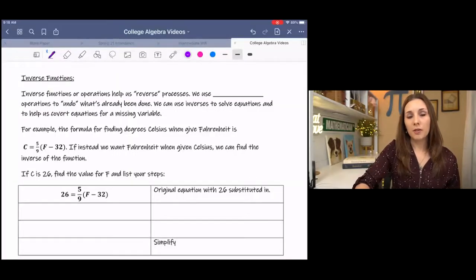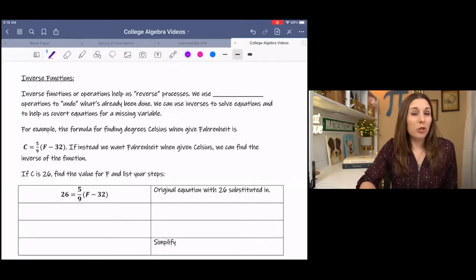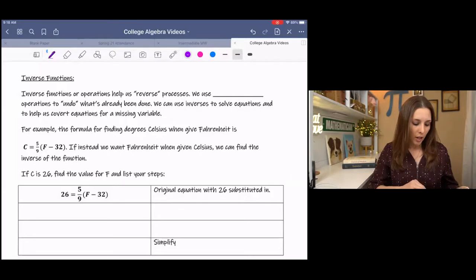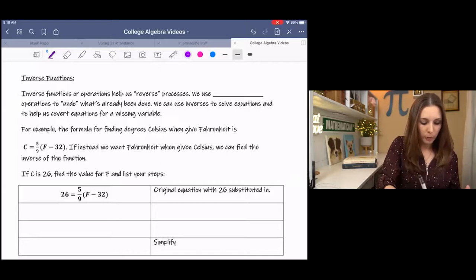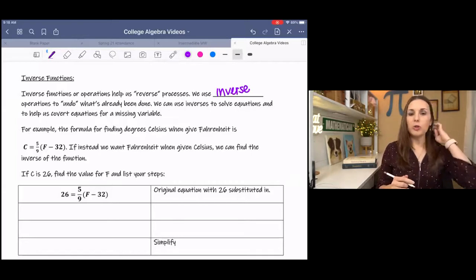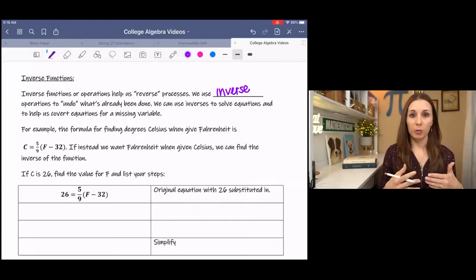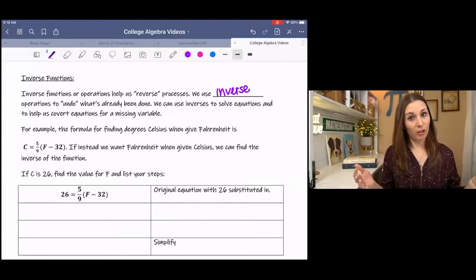Sometimes it can help to think of a simpler problem when we're starting something new. So when you think about the word inverse, inverse means opposite. So all we're just doing is finding the opposite. You might also hear undo. Inverse functions can help us reverse processes. We use inverse operations to undo. And we can also use inverses to find a missing variable or determine if two functions are inverses.